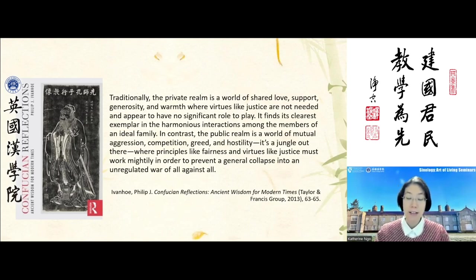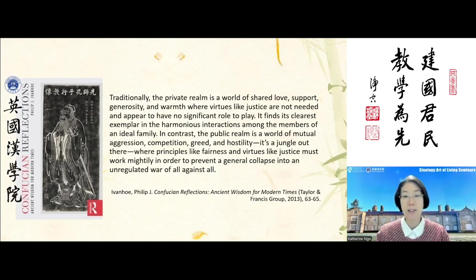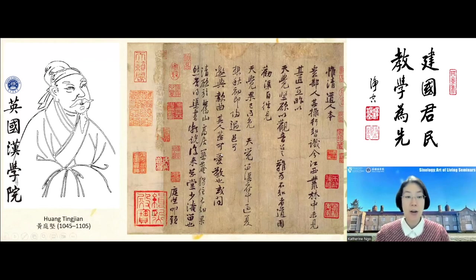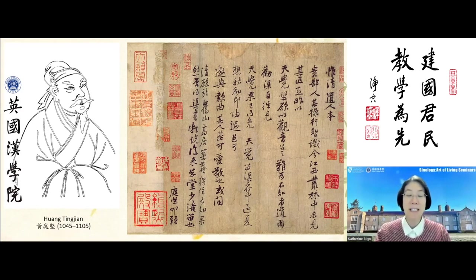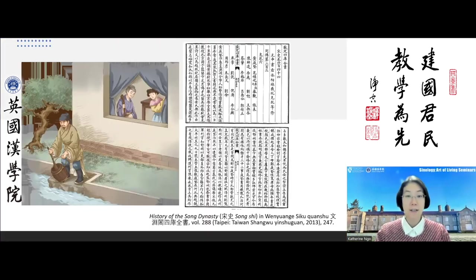Three cases highlight the virtues encountered in this passage — family reverence, fraternal respect, and compassion. The first is Huang Tingjian, who lived in the 11th century, very well known as a statesman, calligrapher, painter, and poet, but also famous as an exemplar of family reverence. Historical records tell us that his mother was severely debilitated throughout the year, and he personally took care of her — including personally cleaning the chamber for his mother.